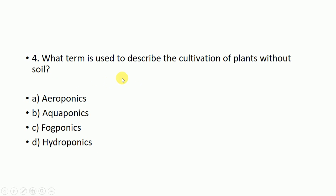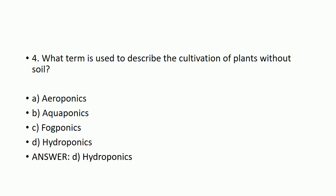What is the term used to describe the cultivation of plants without soil? Options: aeroponics, aquaponics, fogponics, or hydroponics? The correct answer is hydroponics. Hydroponics is the term used to describe the cultivation of plants without soil.